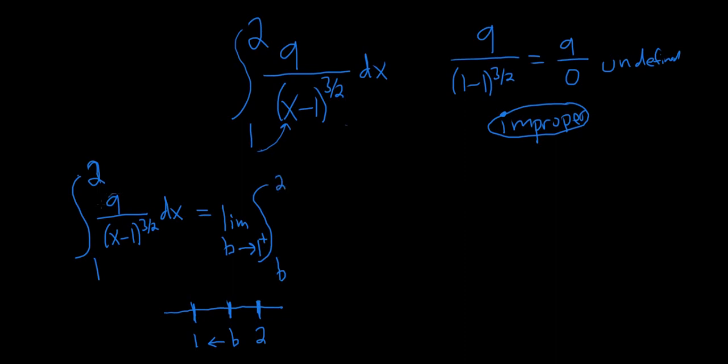Now to integrate this, we want to write it as something to a power. So I'm going to take this bottom piece and bring it up like this, 9 parentheses x minus 1 to the negative 3 halves dx. So note that technically we're supposed to make a u substitution here. We're supposed to let u equal x minus 1, and if you do that, you just get du equals dx. Let's go ahead and be a bit abusive and just use the power rule on this piece because of that. If we were to make a u sub, nothing would change.